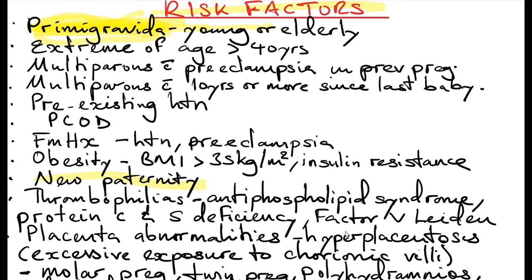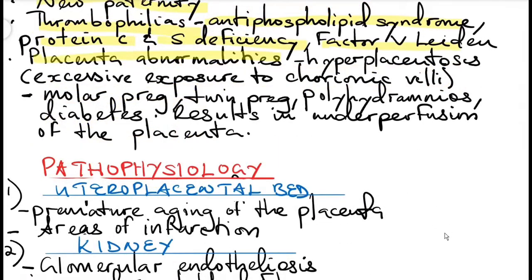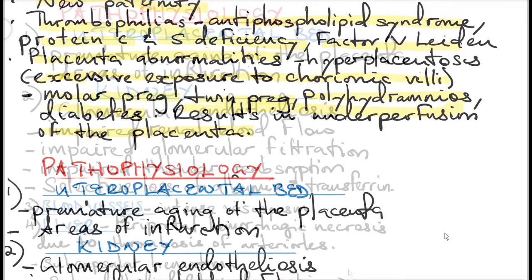More risk factors include extremes of age, multiparous women with preeclampsia in a previous pregnancy, multiparous with 10 years or more since the last baby, pre-existing hypertension like chronic hypertension, polycystic ovarian disease, family history of hypertension and preeclampsia, obesity with a BMI of more than 35, and placenta abnormalities like molar pregnancy, twin pregnancy, polyhydramnios, and diabetes. These result in underperfusion of the placenta due to excessive exposure to the trophoblast.